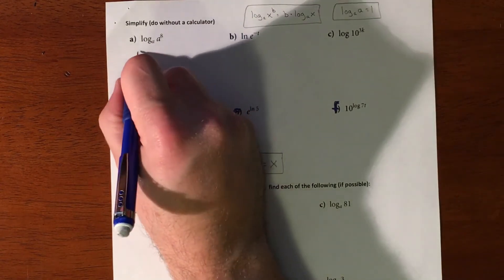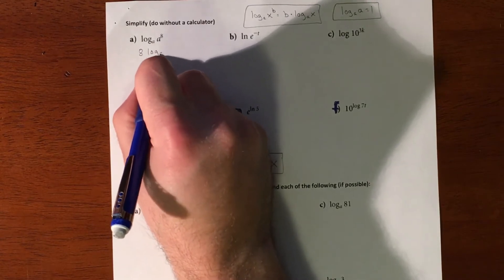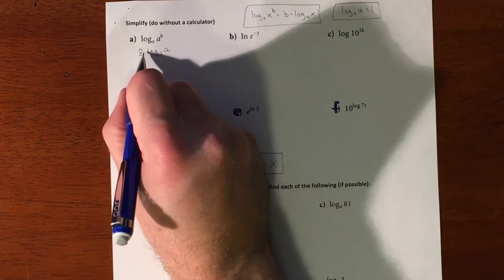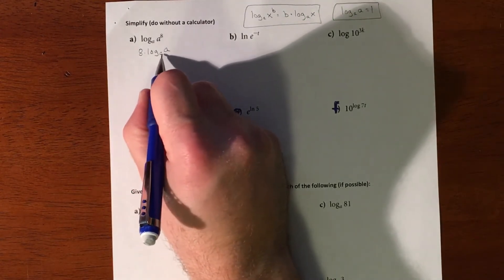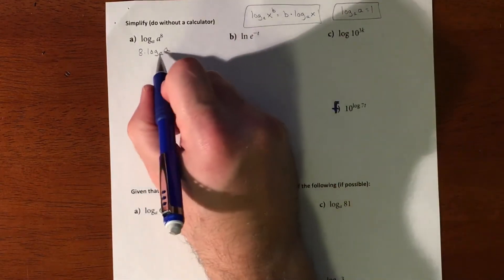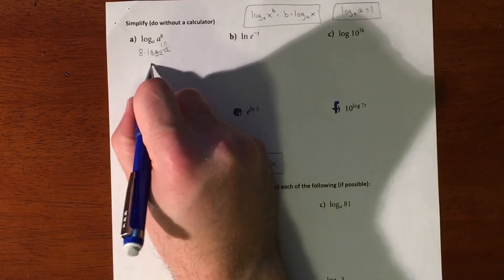We pull the eight in front. If we pull the eight it's going to be multiplied to this. Well this is that property, so that piece becomes one. So it's eight times one is eight.